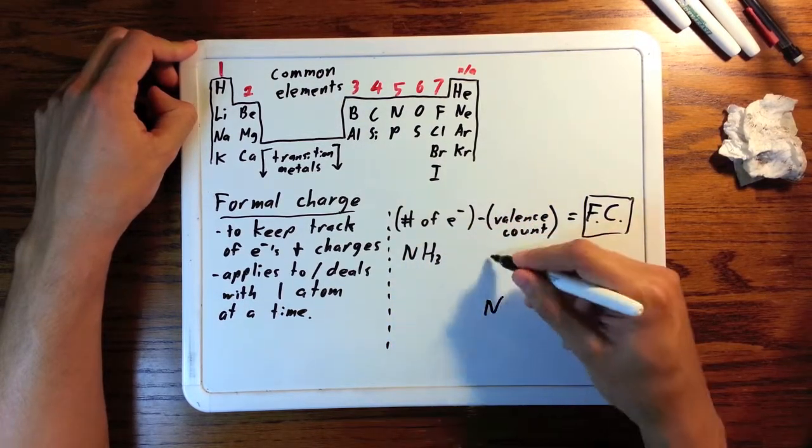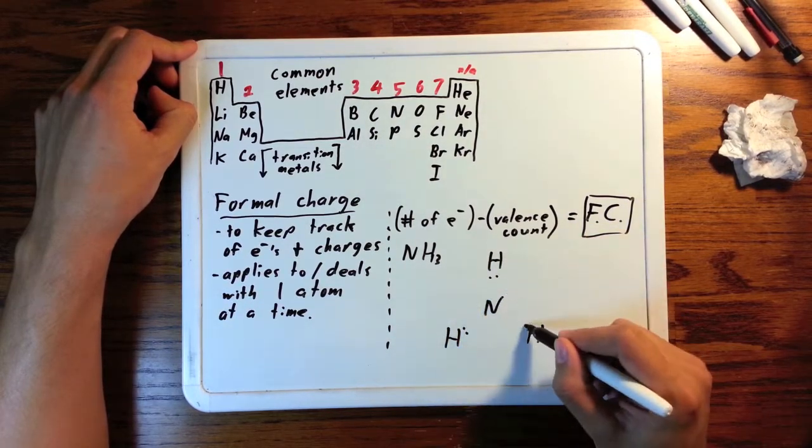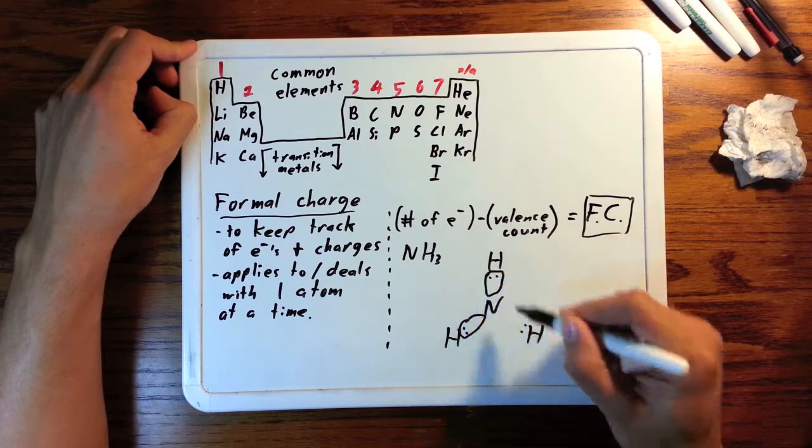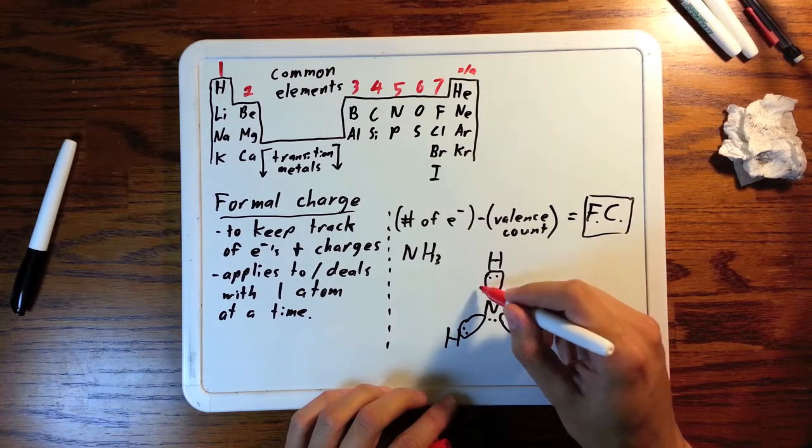Let's look at ammonia, NH3. You should know from the Lewis dot structure video that you fill up the outer atoms first, give hydrogens all two, and we have eight electrons so there's two left over. Everybody's happy.